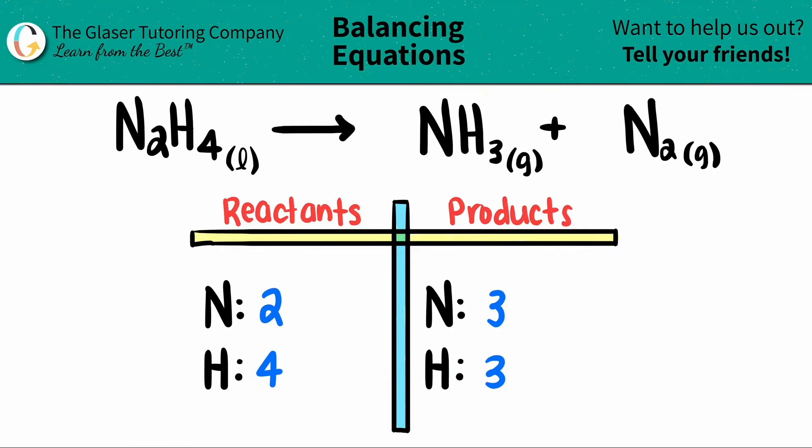But what I can do is I can work with the hydrogens to get the four and the three to be the next common number that they have between them. So I can basically multiply them by each other. When they don't have a common number to get from one to another, all you got to do is just multiply by the other number. So four times three would be 12 and three times four would be 12.